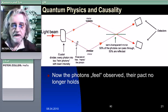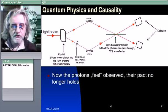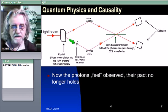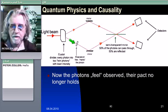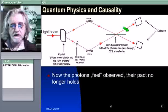But now, a strange thing happens. The photons feel observed, and their pact no longer holds. In physics this is done not by spot painting, but by so-called polarization filters, which mark the photon in a special physical way. And if observed, then suddenly all four of the possibilities I mentioned can now occur.